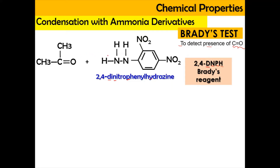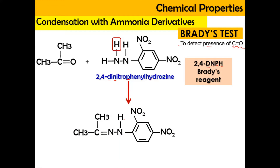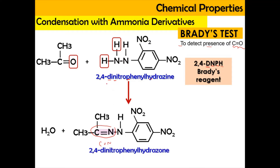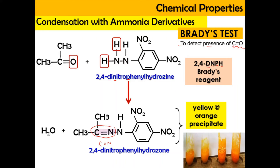When a ketone or any aldehyde reacts with the Brady's reagent, what we produce is an imine — C double bond N. As a product of condensation, we remove 2 hydrogens and 1 oxygen from the C=O. The byproduct is water as a product of elimination. From 2,4-dinitrophenylhydrazine, we produce a 2,4-dinitrophenylhydrazone, and this gives a yellow or orange precipitate, as shown in the figure here. This is how we detect the presence of the carbonyl group.